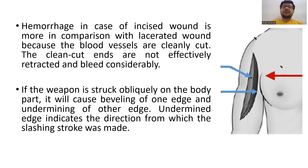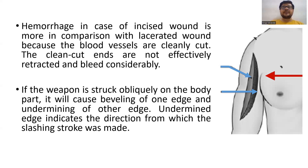The clean-cut ends are not effectively retracted and bleed considerably. If the weapon is struck obliquely on the body part, it will cause beveling of one edge — as shown by the blue arrow, a slopy edge — and undermining of the other edge. The undermined edge indicates the direction from which the slashing stroke was made. So the red arrow shows from which side the stroke and incision was made.